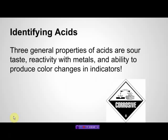Identifying acids. There are three general properties we are going to use to identify acids. The first one is that they are sour — they will taste sour. An example of this would be certain types of fruits. Acids typically will react with metals, and they also have the ability to produce color change in indicators.